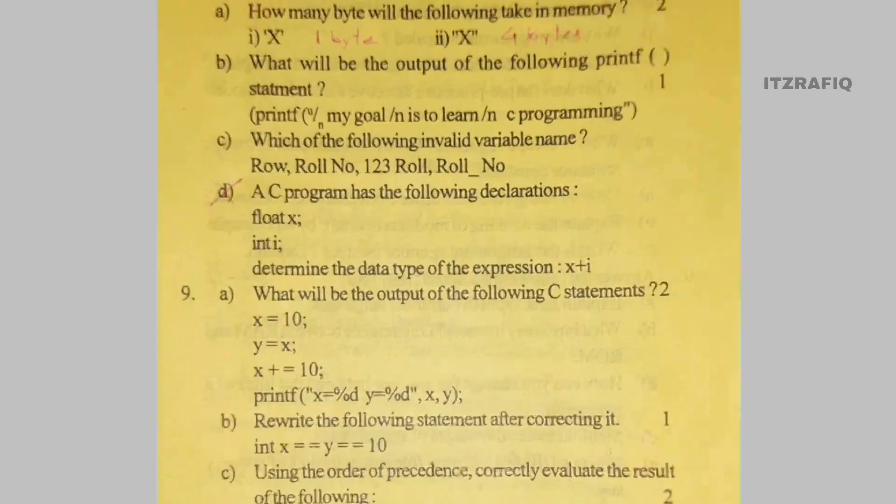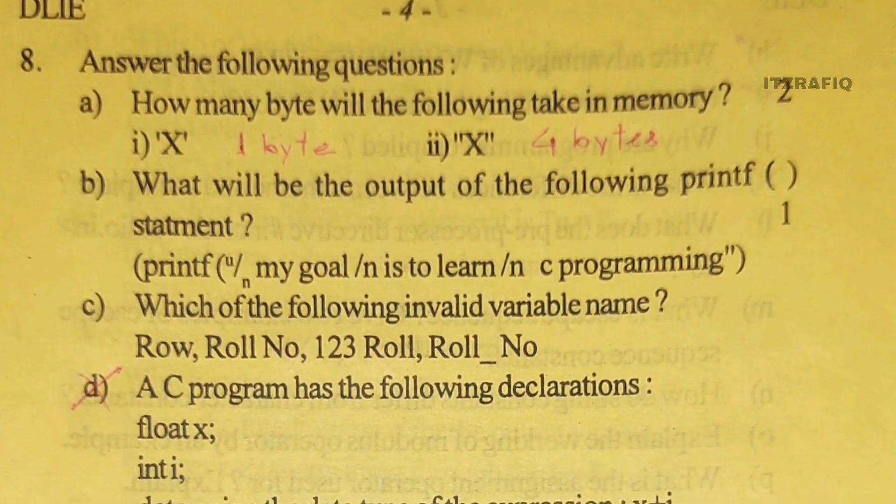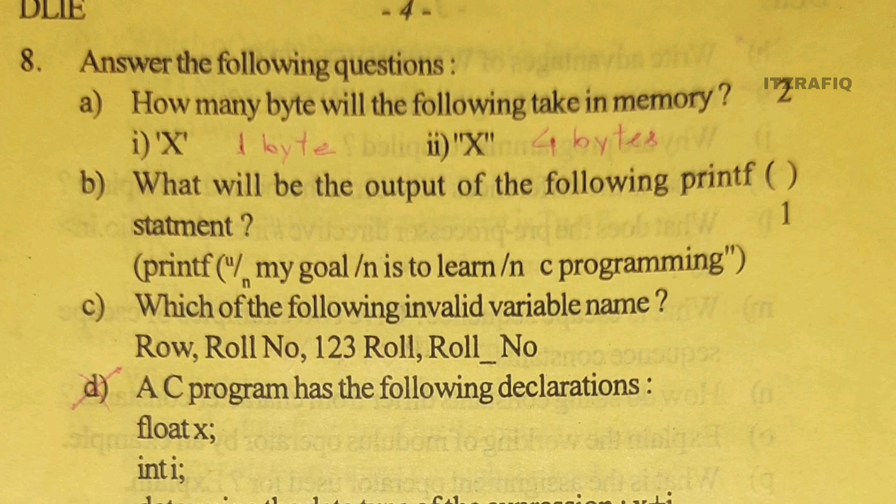How many bytes will the following take in memory? Single inverted comma means it is character - one byte. Double inverted comma means string - four bytes.